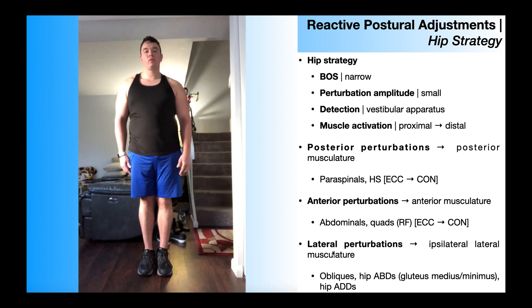Hip strategies can also be induced by laterally directed perturbations, where the center of gravity shifts either left or right. With these, you're going to have mostly ipsilateral lateral musculature that activates — meaning if the center of gravity shifts toward the right, it's going to be mostly muscles on the right side that activate to move the person back to their original position, and vice versa. Although, depending where you're looking, you may also have contralateral muscles that activate. To understand this, we need to look at a specific example.